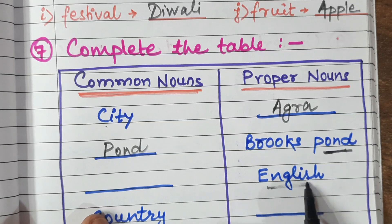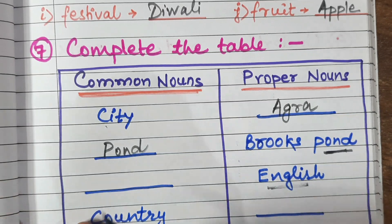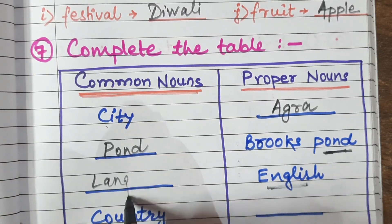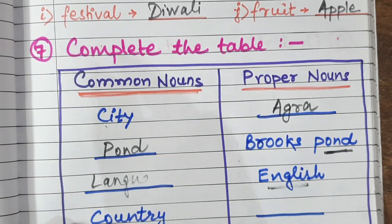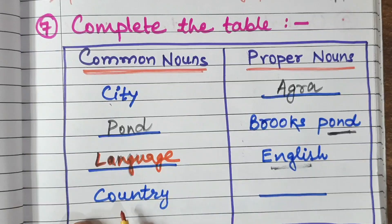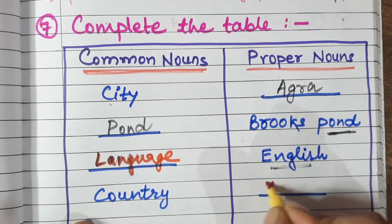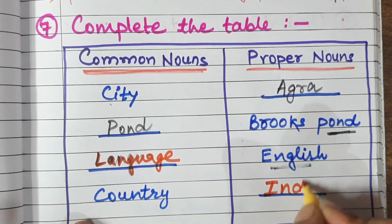English: what is English? English is a language. So we write common noun 'language' here. Country: the common noun is 'country'; you can write any country name in the proper noun column.